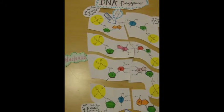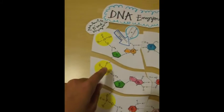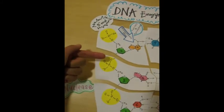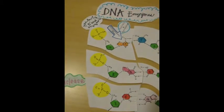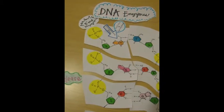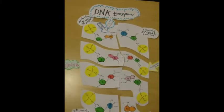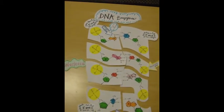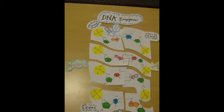Phosphodiester bonds are the covalent bonds between the hydroxyl of the sugar and the hydroxyl of the phosphate group. This nuclease enzyme would be found in a lysosome to break down foreign DNA.